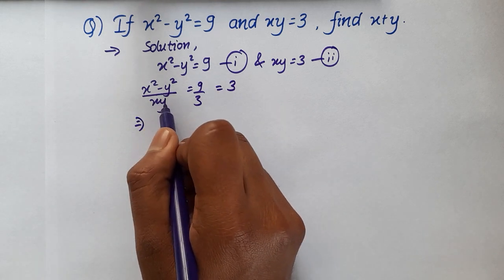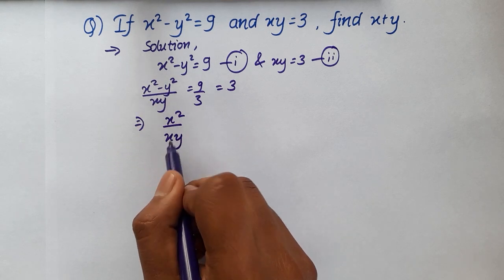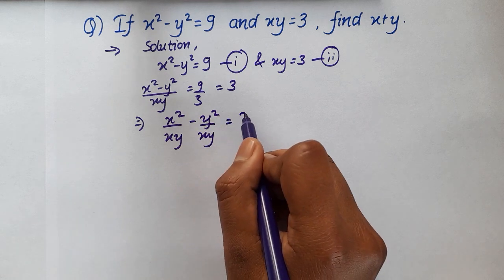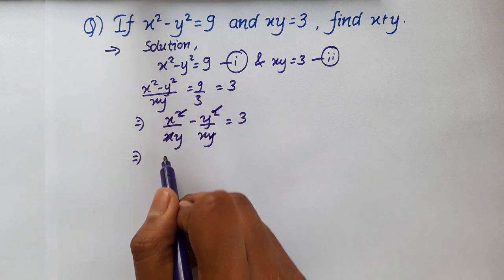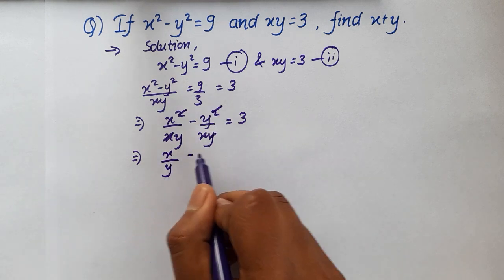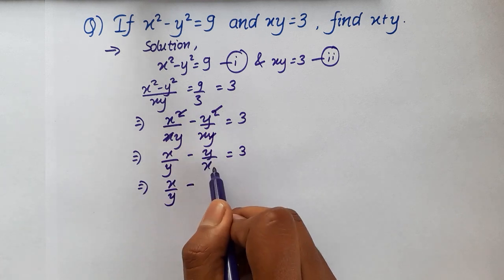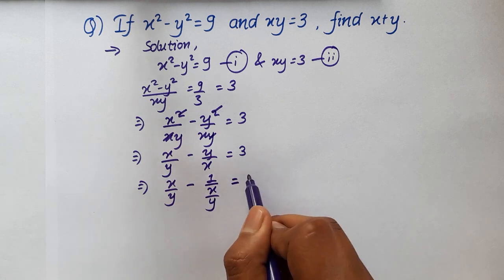And now if we distribute xy to both of the terms then we will have x square over xy minus y square over xy equal to 3. Let's cancel out the x and y then we'll have x over y minus y over x equal to 3. Now x over y minus this term here it can be written as 1 over x over y equal to 3.